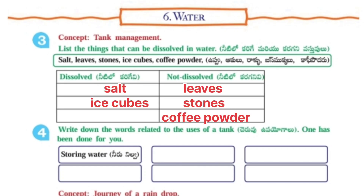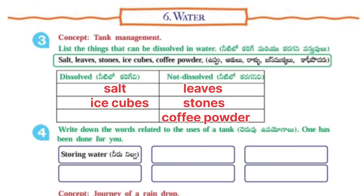Next: List the things that can be dissolved in water. Given items: Salt, leaves, stones, ice cubes, coffee powder. Dissolved in water: Salt, ice cubes. Not dissolved: Leaves, stones, and coffee powder.